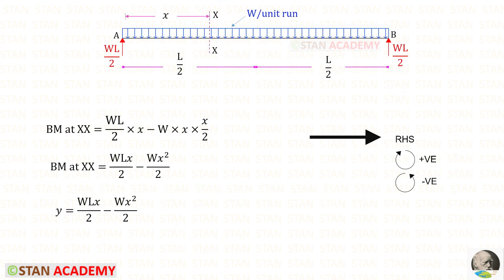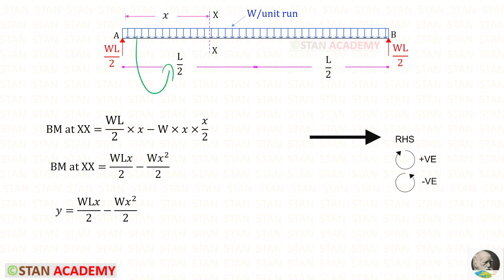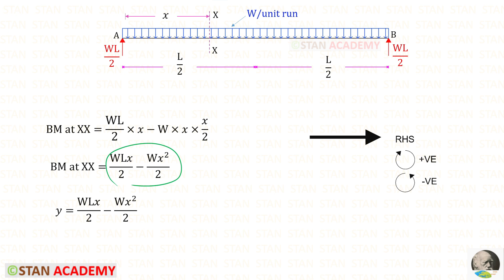Alternatively, we can find the expressions using integration. We have to make a section XX at a distance x from A. Let us find the moment about the section. The reaction is acting in the clockwise direction so positive, and the distance is x. The UDL is acting in the anti-clockwise direction so it will be negative. The area is w × x and the centroid distance about the section is x upon 2. Finally we get the expression for the equation of the parabola — let us keep this as y.